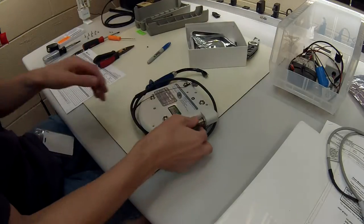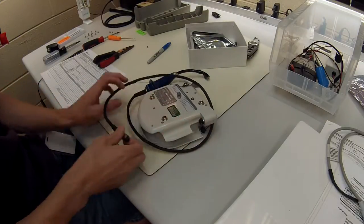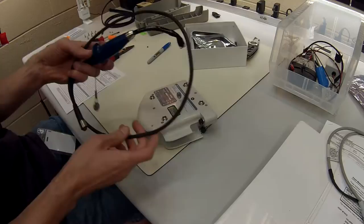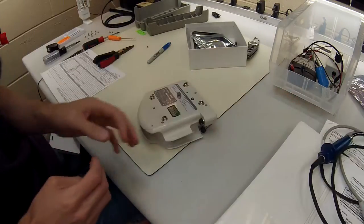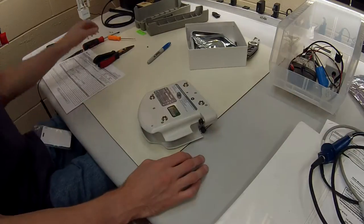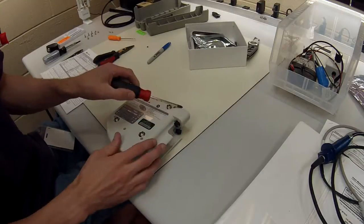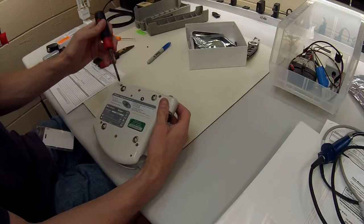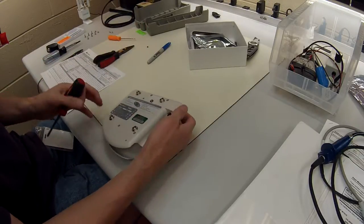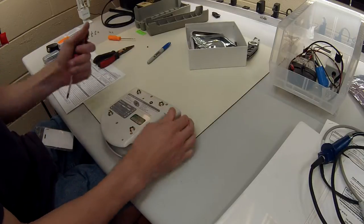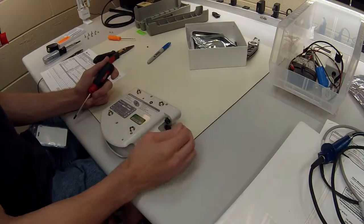Okay, so the first step is we're going to remove the stylet right here. You're just going to twist and pull it out. This can go aside. Next, we're going to remove these six screws right here and the whole back will pop off. So go ahead and do that.